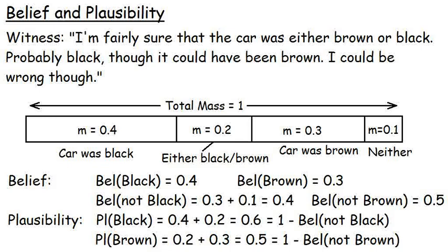Instead of probabilities, these individual values assigned to the possible states are often referred to as masses. That's why I use the letter M in the diagram. Now, we can combine those masses into belief values or support values. The belief that the car was black is simply the mass that we gave to the witness's statement that the car was black, 0.4. We can't include the value of 0.2, as that isn't a mass supporting the belief that it was black, but really supporting the belief that it was one of the two colors. Similarly, the belief that the car is brown is 0.3.